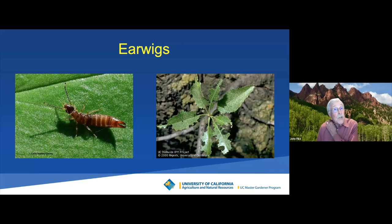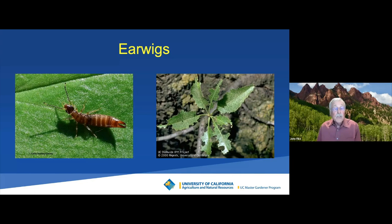One strategy for seedlings is to get a milk carton or plastic soft drink container, cut the top of the bottle off to make a sleeve, and put the sleeve over the plant. Earwigs, slugs, snails, and other creatures can't crawl up into the plant, and when the plant gets big enough it can withstand some of the damage. There are traps you can make or barriers you can use to exclude these insects.